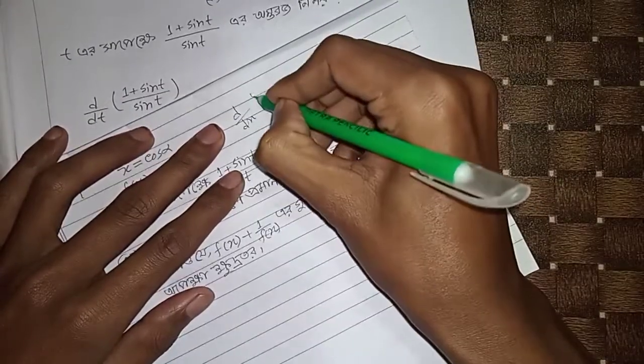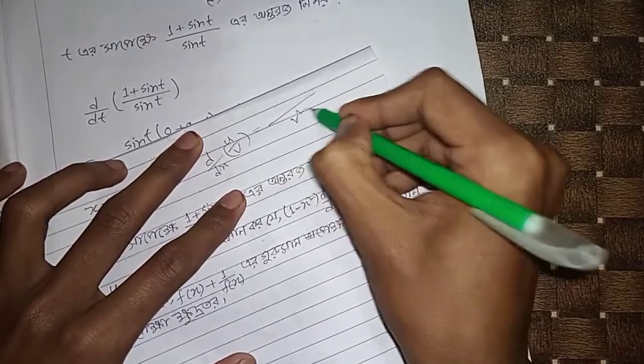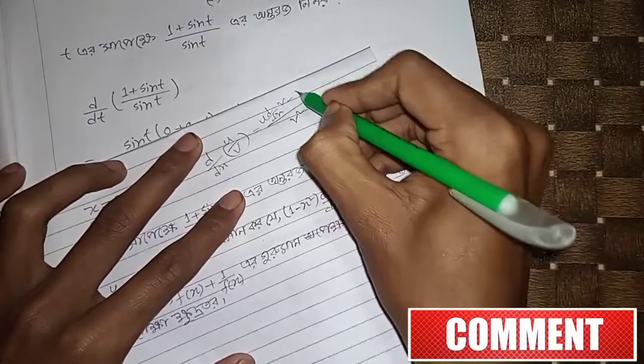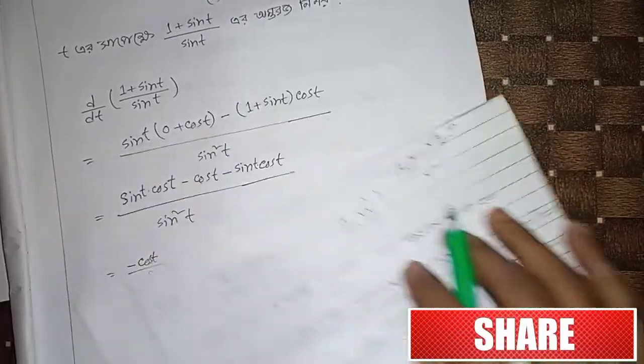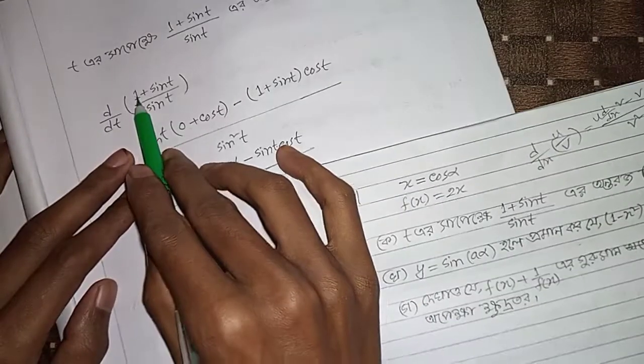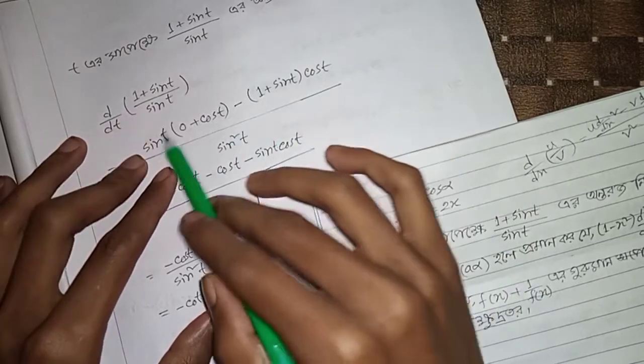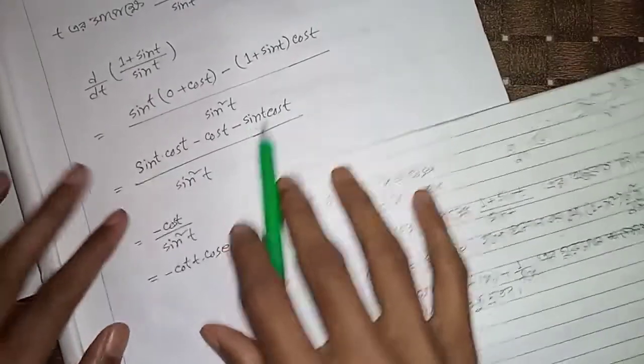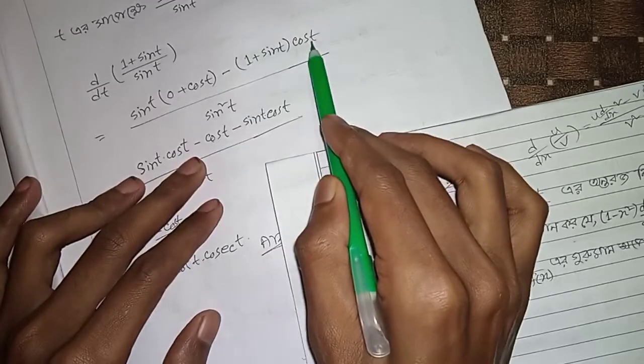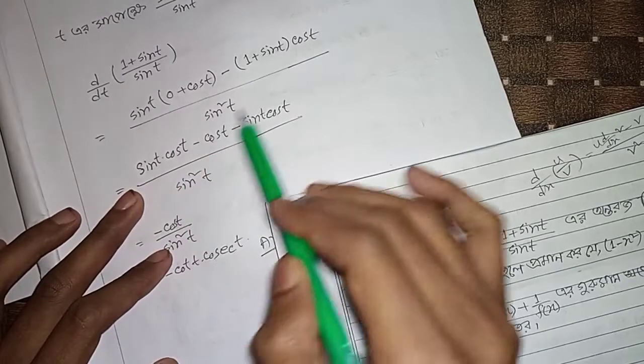d/dx of u times v equals v(du/dx) minus u(dv/dx) over v². Using sin²t, we get sin t cos t minus cos t plus minus sin t cos t.